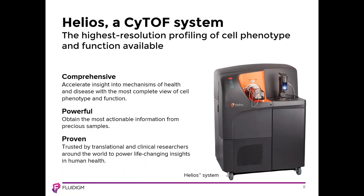Let's discuss the components of the system in more detail. First is the Helios mass cytometer. By enabling routine analysis of greater than 40 parameters per cell, Helios offers the most complete and comprehensive view of cell phenotype and function in a cytometric platform available today. The power of this technology allows you to collect the most actionable information from every cell in every precious sample. This technology is now available at over 200 sites worldwide and is a key technology in multiple clinical trials.